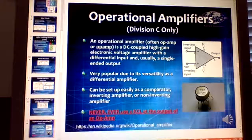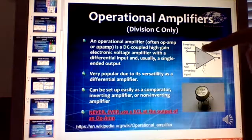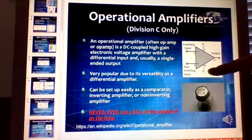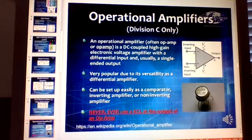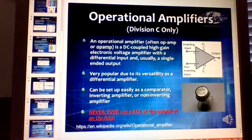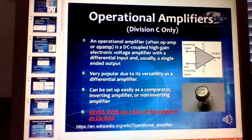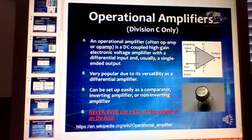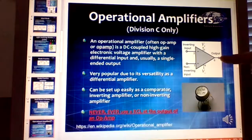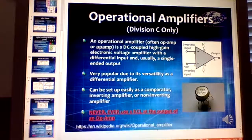An operational amplifier — Division C only — has two inputs: the inverting input and the non-inverting input. There's also a positive and negative supply voltage, which determines maximum gain. For ideal op amps, you assume infinite gain. In reality you can see around 10,000 times gain. Never put a KCL at the output, but you can create many different configurations with op amps.